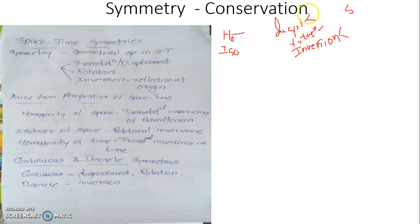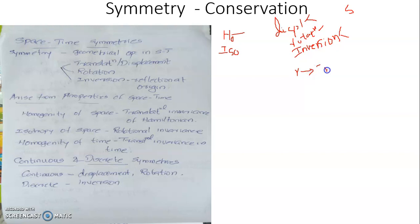Looking at the first two geometrical operations — displacement and rotation — the coordinate, either space or time, changes continuously. Hence these symmetries are referred to as continuous symmetries. Whereas once you look into the case of inversion in space or time, all at once the space coordinate r is replaced by −r when you account for a mirror image at the origin. Hence the symmetries associated with inversion are referred to as discrete symmetries.